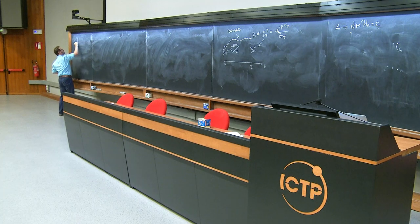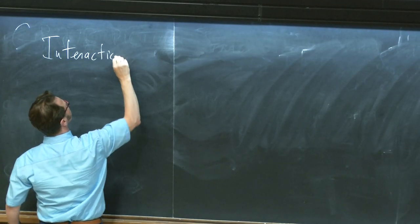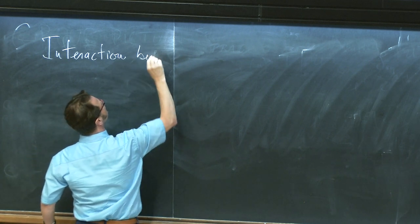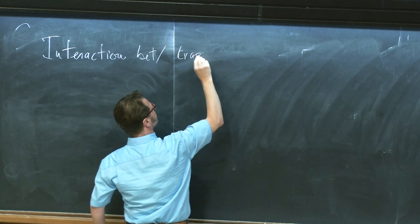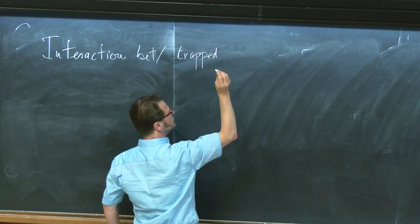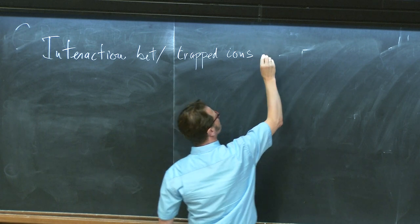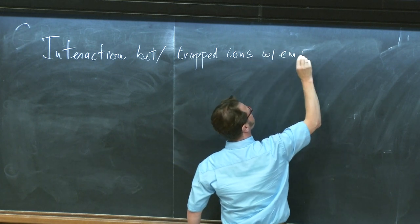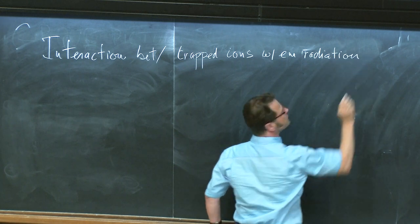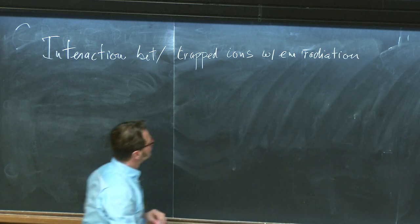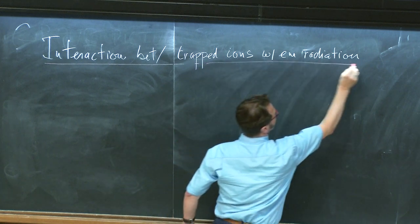So what we want to look at is the interaction between trapped ions — and like I said, you can replace this with neutral atoms or something — with electromagnetic radiation. That's what we will do here on the blackboard.